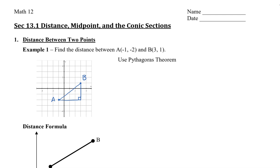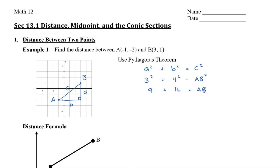With right triangles, we know that we can use Pythagoras' theorem, and that's A squared plus B squared equals C squared. The vertex A has opposite side little a, vertex B has opposite side little b, and our hypotenuse will be C. So we can say that A, which is 3 squared, plus B, which is 4 squared, is equal to length AB squared. So 9 plus 16 equals AB squared, and 25 equals AB squared. Square rooting both sides, we can see that AB has a length of 5.